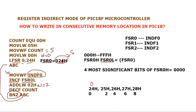On the next iteration, 'MOVWF INDF0' moves the working register value, which is now 2, into INDF0, which points to FSR0 — now 0x25. So location 0x25 will have the value 2. This process continues for five iterations, storing 0, 2, 4, 6, and 8 into locations 0x24 through 0x28. This is how you can write in consecutive memory locations. You can not only increment the address but also decrement it depending on your logic. I hope I have answered the question posted on the channel. If you have any confusion in register indirect mode or this program, post your queries in the comment section. Thank you so much for listening.